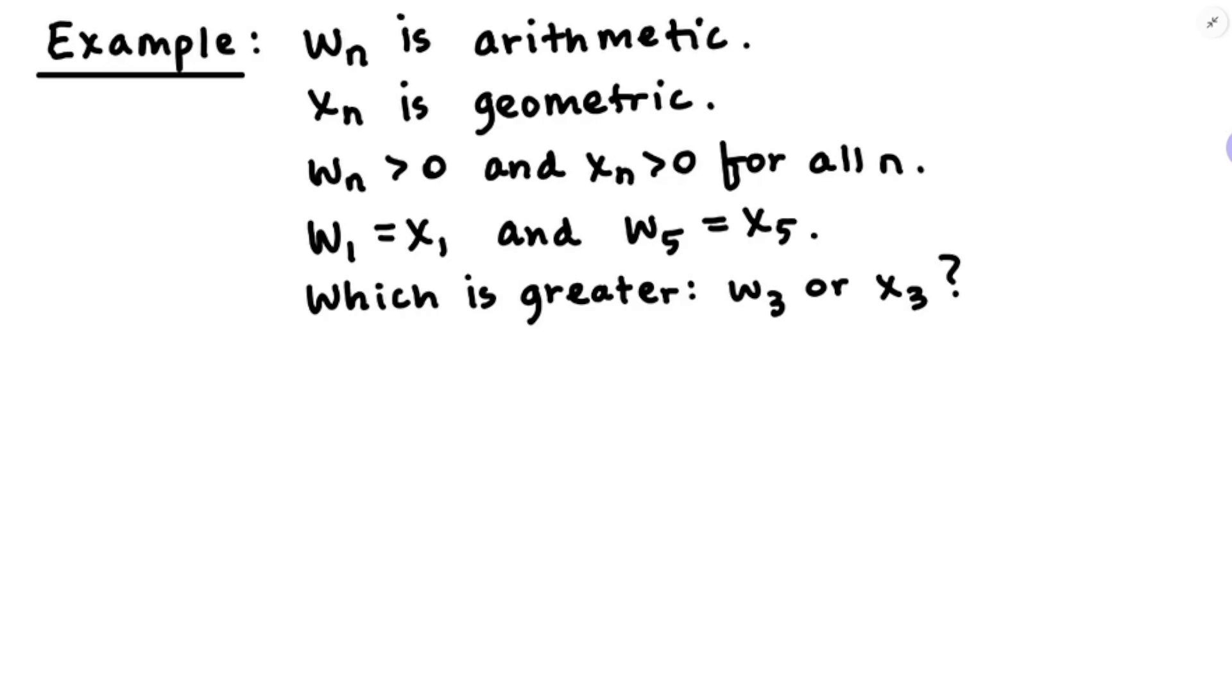All right, now the last example I've got for you, this is a good one. So we've got two different sequences, w and x. W_n is an arithmetic sequence, and x_n is a geometric sequence. And they're both positive for all n. And they're equal at the first term and the fifth term. And I'm going to ask you which has got to be greater, w_3 or x_3? And this goes all the way back to the original definitions of arithmetic and geometric.